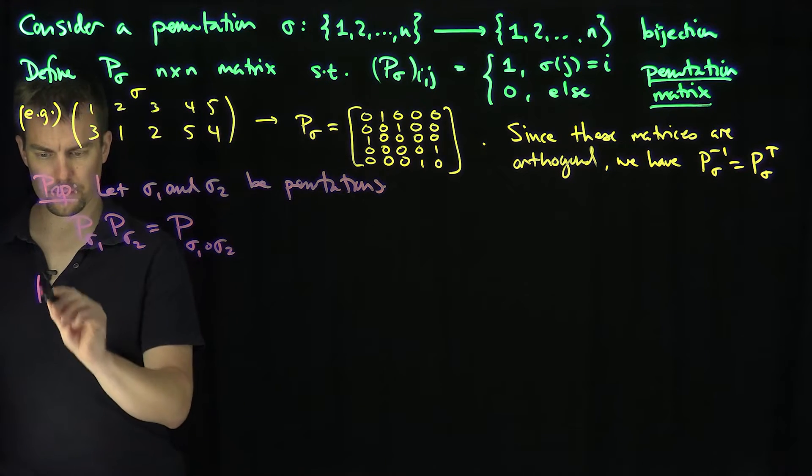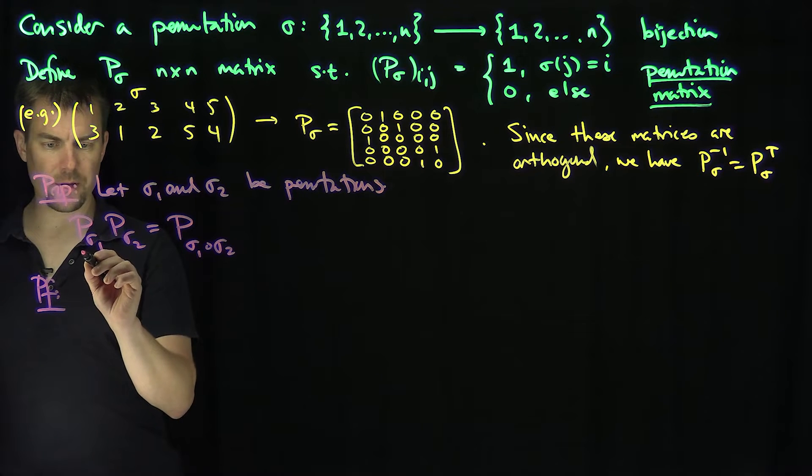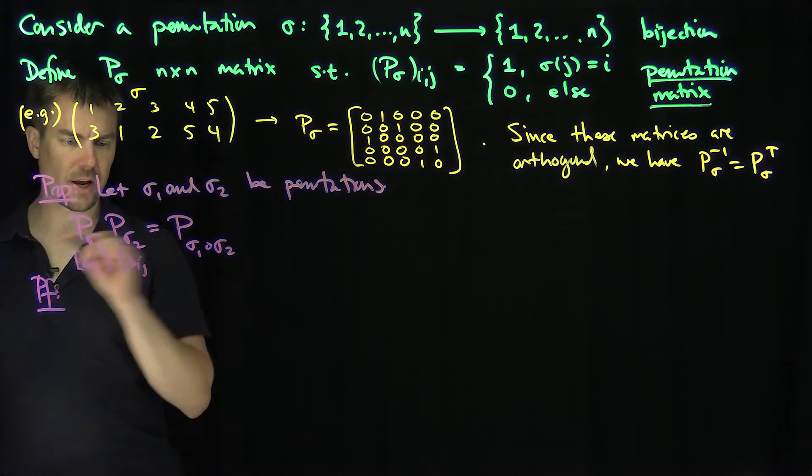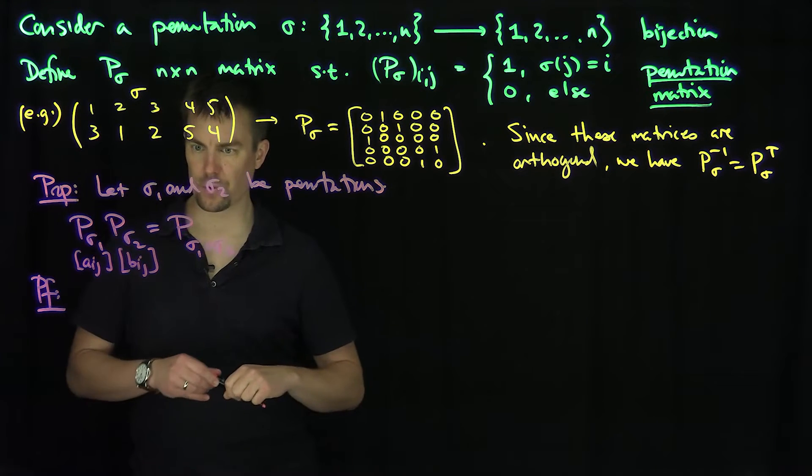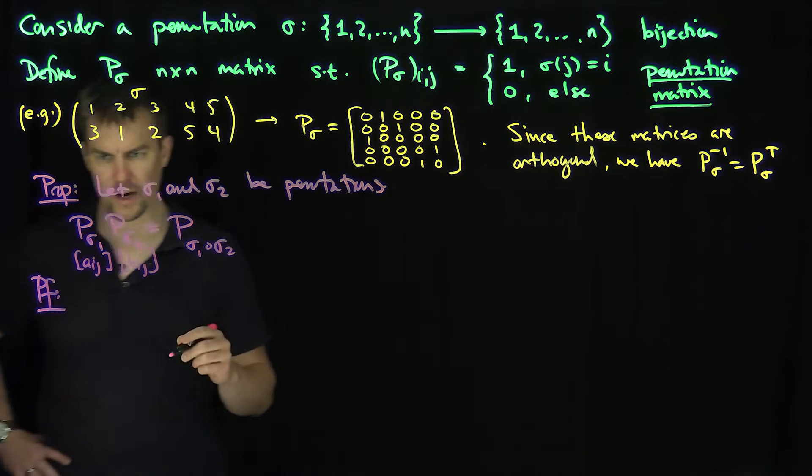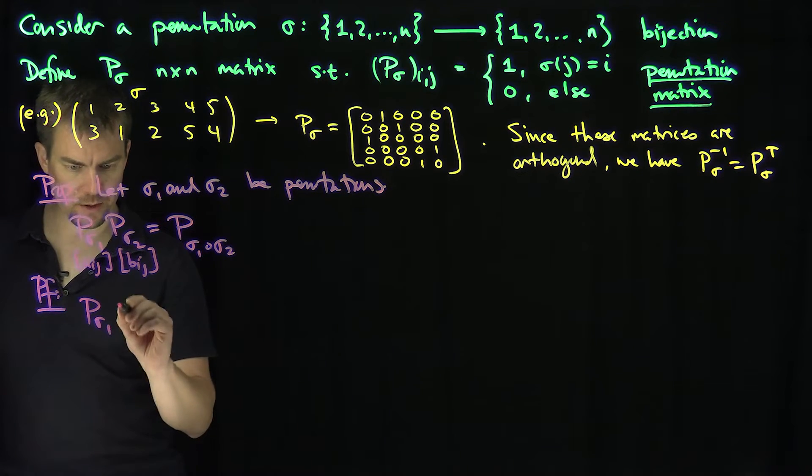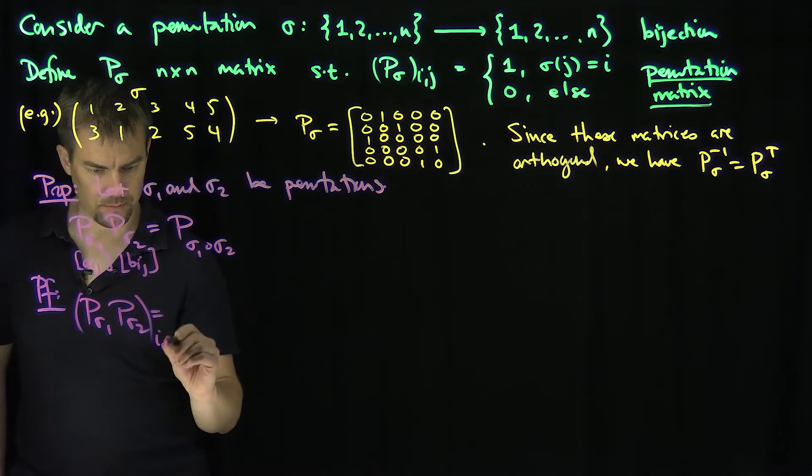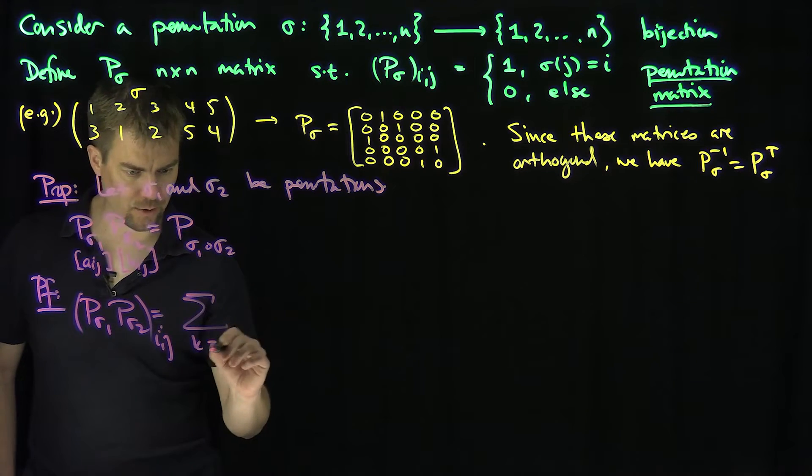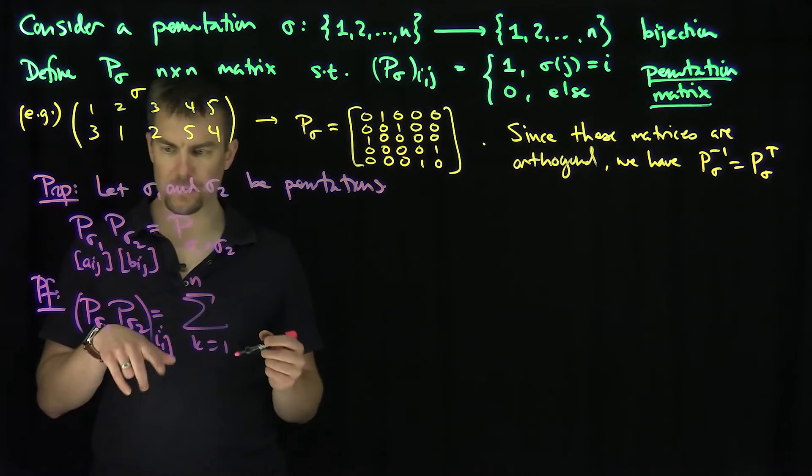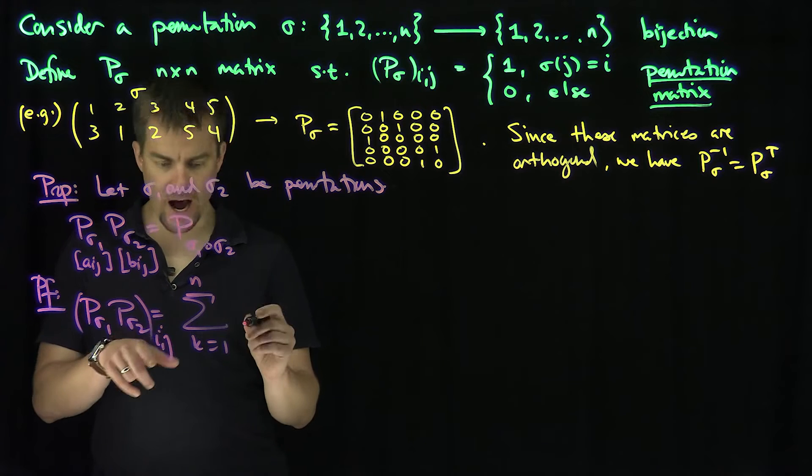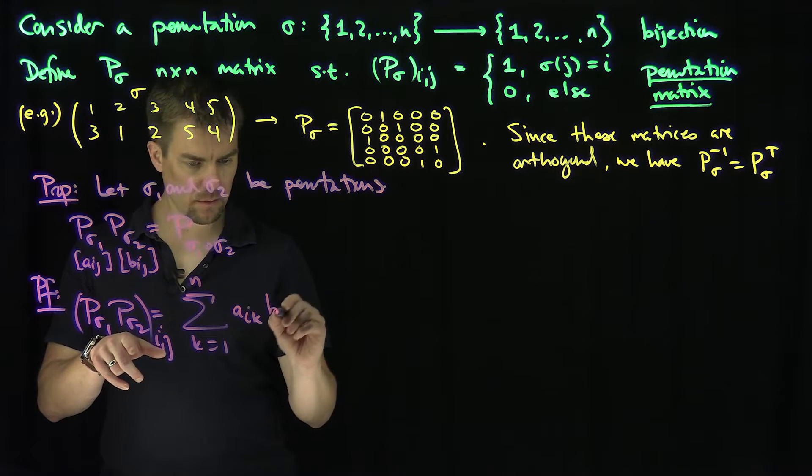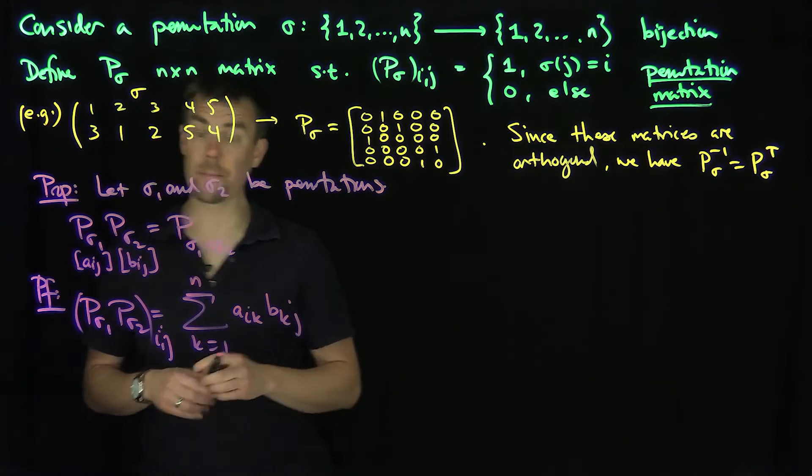So how we prove this. Proof. Let's suppose that this is a matrix A_ij, and this is a matrix B_ij. So in other words, sigma_1 corresponds to the matrix A, sigma_2 corresponds to the matrix B. So what will P_sigma_1, P_sigma_2 look like? The i,j entry of this will be the sum, K goes from 1 up to N, of what? Of the A_i_K and then B_K_j, by definition of multiplication.